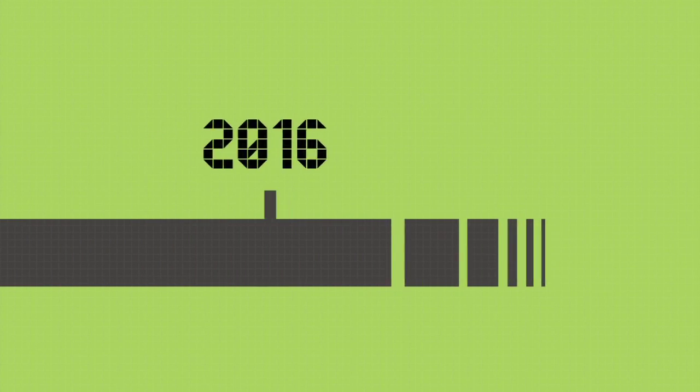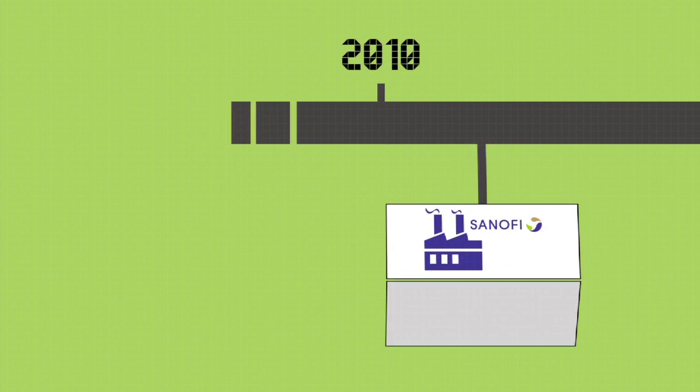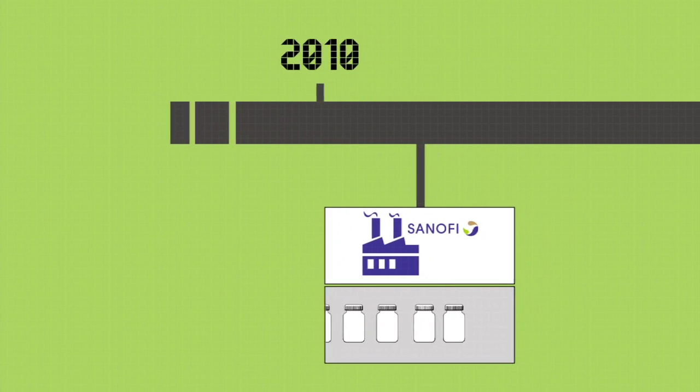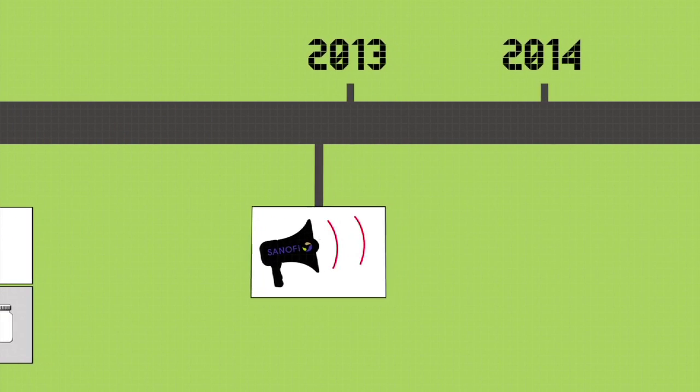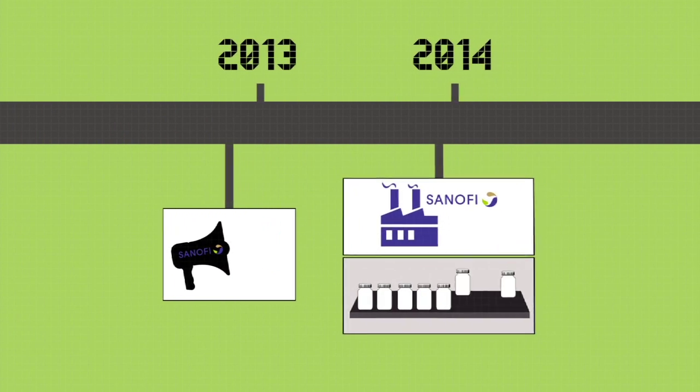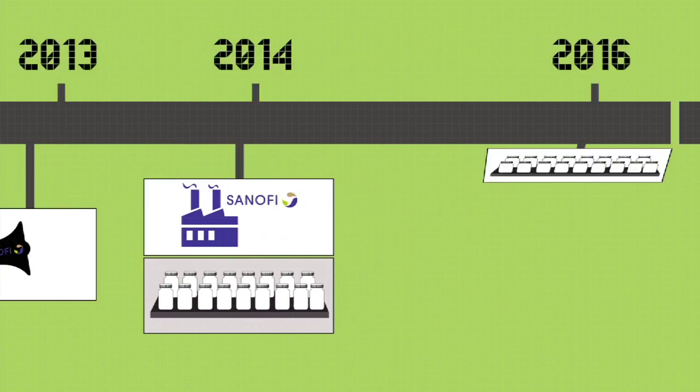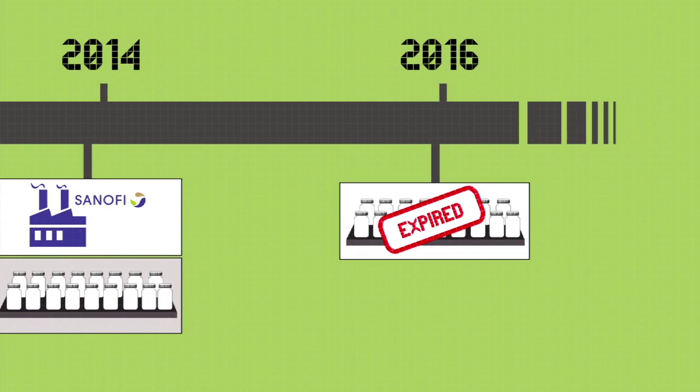To understand why there will be no serum in the upcoming years, we have to go back to 2010. In 2010, Sanofi decided to halt production of Vavafric, viewing it unprofitable. The decision was only made public three years later. Sanofi produced its last batch of serum in 2014, which will expire in 2016.